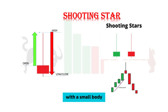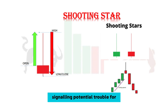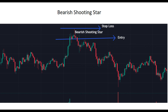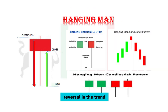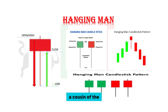Moving on to the shooting star — a single candlestick pattern with a small body and a long upper wick. It appears after an uptrend, signaling potential trouble for the bulls. The shooting star suggests that buyers initially pushed the price higher but failed to maintain control, potentially leading to a reversal in the trend.